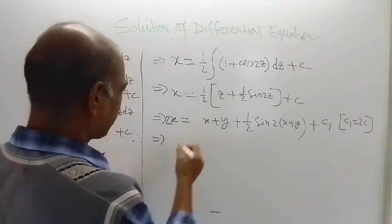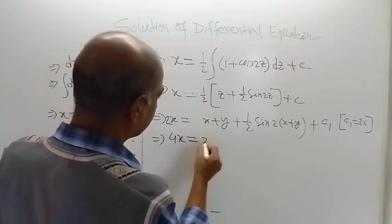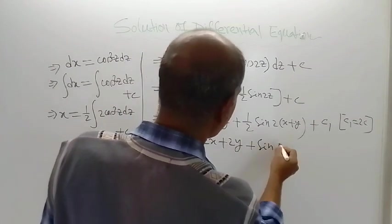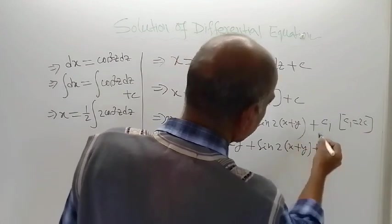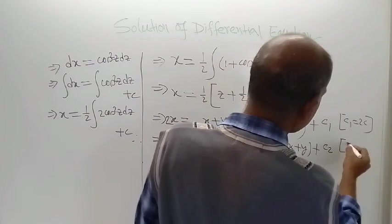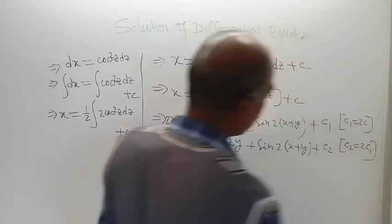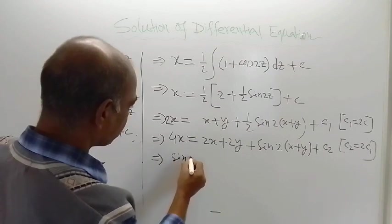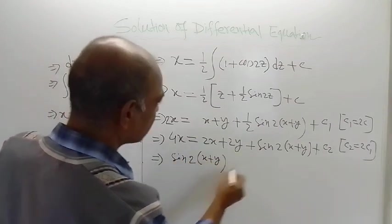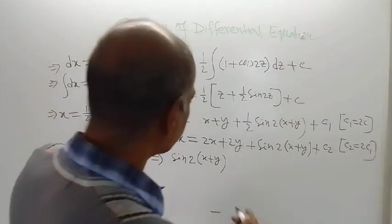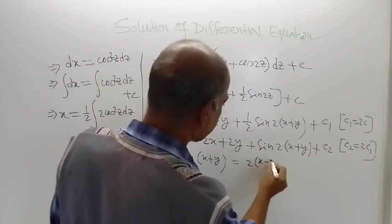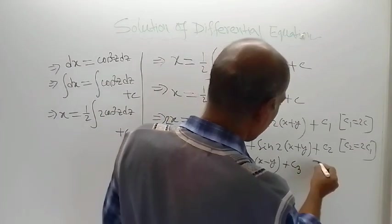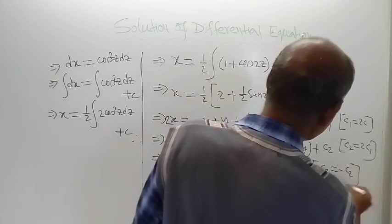Multiplying both sides again by 2, we get 4x on the left-hand side, giving us 2x plus 2y, and sin 2(x plus y) plus 2c1 equals another constant c2, where c2 equals 2c1. Rearranging, sin 2(x plus y) equals 4x minus 2x minus 2y, which is 2(x minus y), plus c3, where c3 equals negative c2.